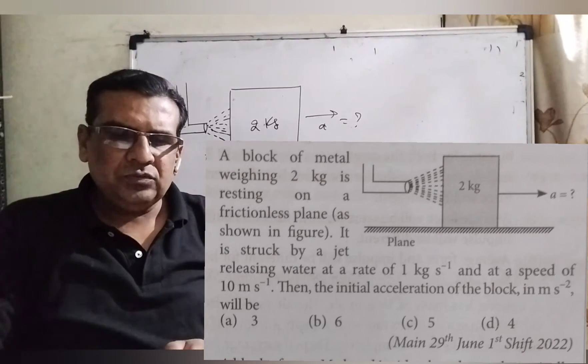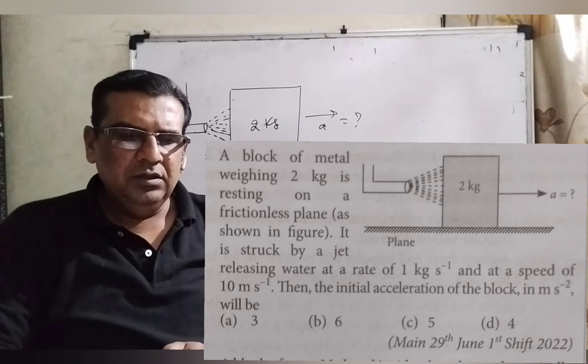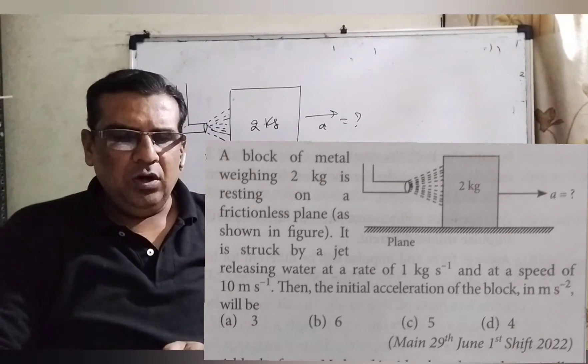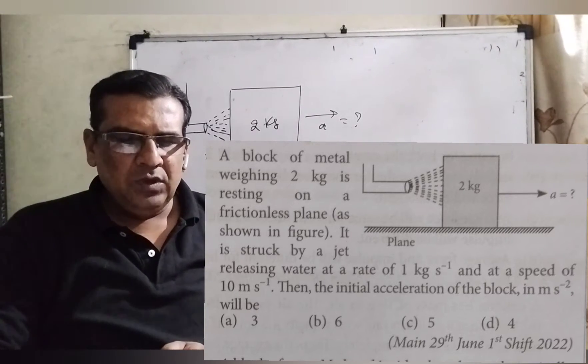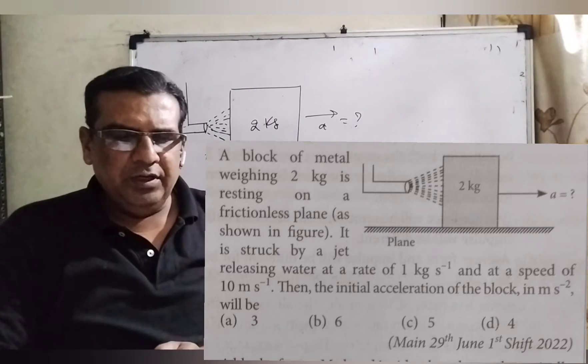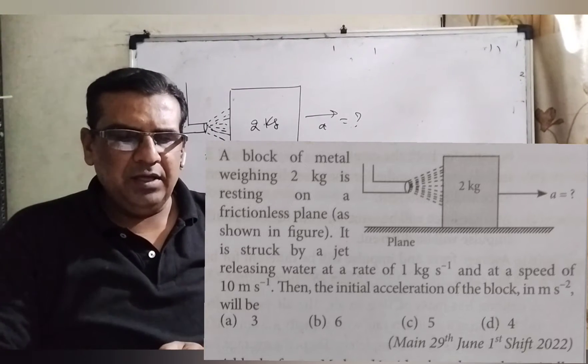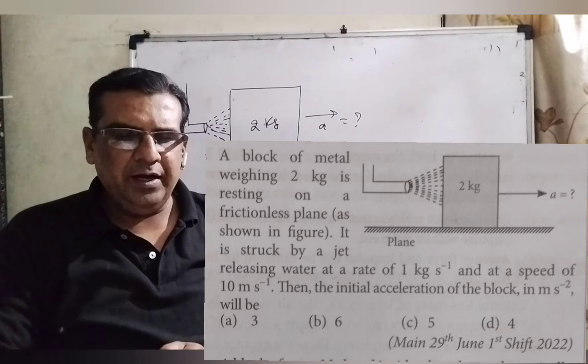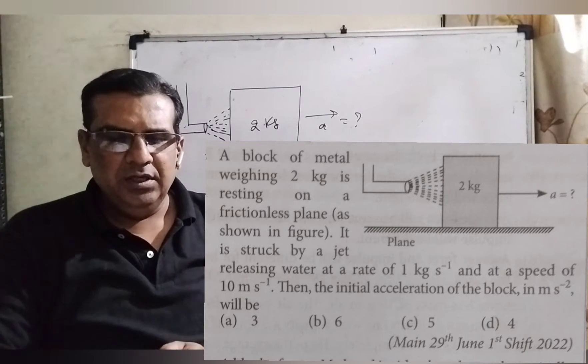Now here is the question: a block of metal weighing 2 kilograms is resting on a frictionless plane as shown in the figure. It is struck by a jet releasing water at a rate of 1 kilogram per second